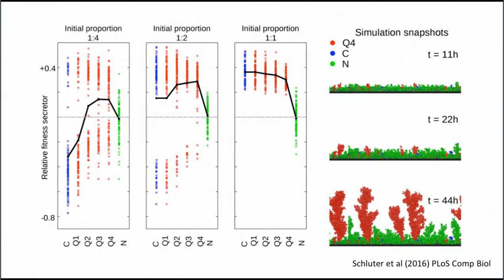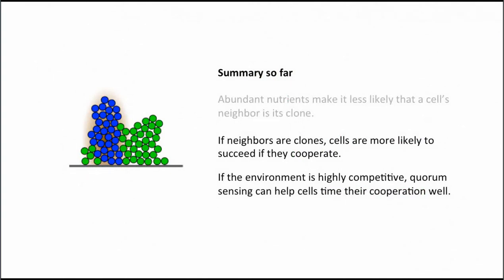The summary from this part: if your neighbors are clones you're more likely to succeed if you make something cooperative. And if you're in a highly competitive environment, quorum sensing can help overcome competition. This is quite different from what people thought in the field — quorum sensing is typically described as a canonical cooperative trait, but we're saying it's cooperative within the group while helping compete against other groups.